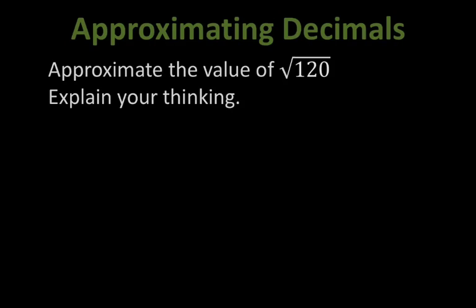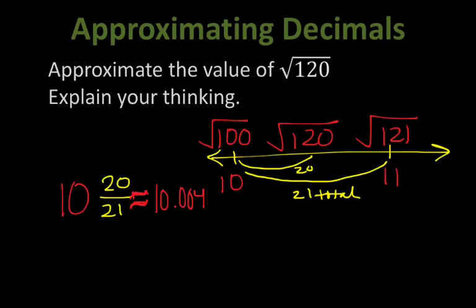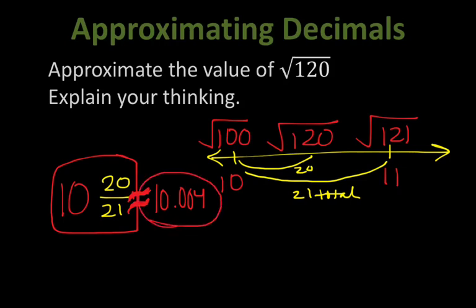Now pause and try this one completely on your own — I'll have the answer up in just a minute. Between 100 and 121 there are 21 units, and square root of 120 would be 20 units in, giving 10 and 20 over 21. After dividing, we approximate it to approximately 10.95. If you actually find the square root of 120 with a calculator, you get 10.5944 — so we got super, super close.